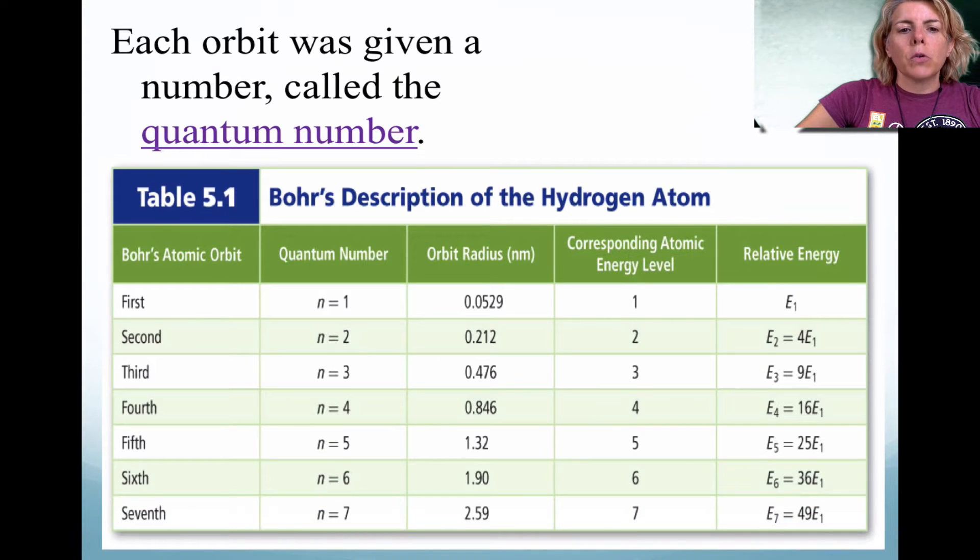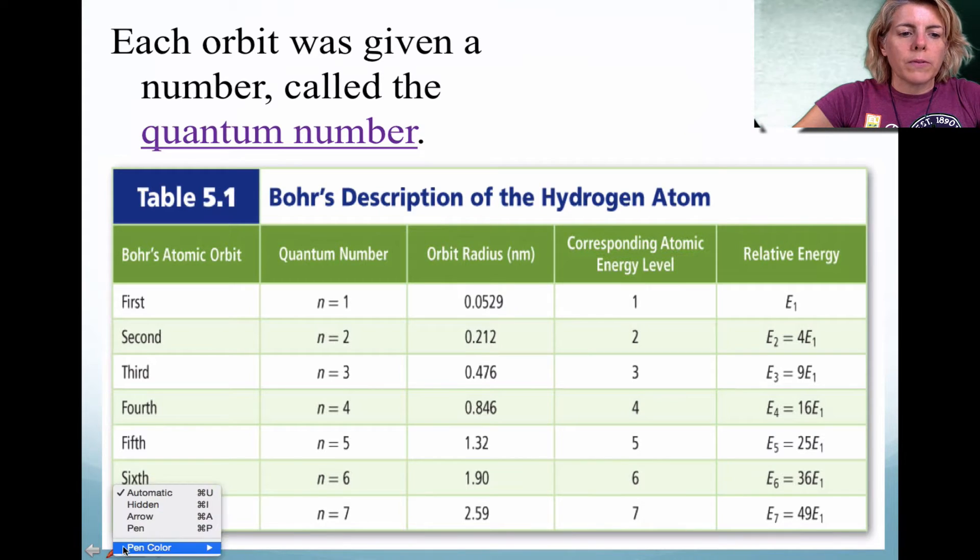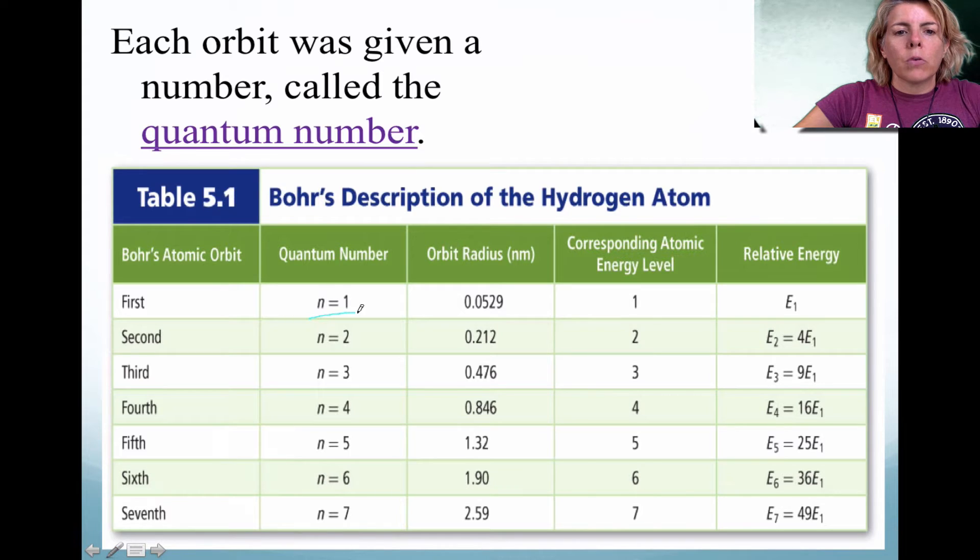So each orbit was given a number, called the quantum number. They knew that the energy was not continuous, and as a result, each orbit that was outside of the nucleus was given a number. And they could actually calculate the energy. Notice as you increase the number of orbitals, the energy increases.